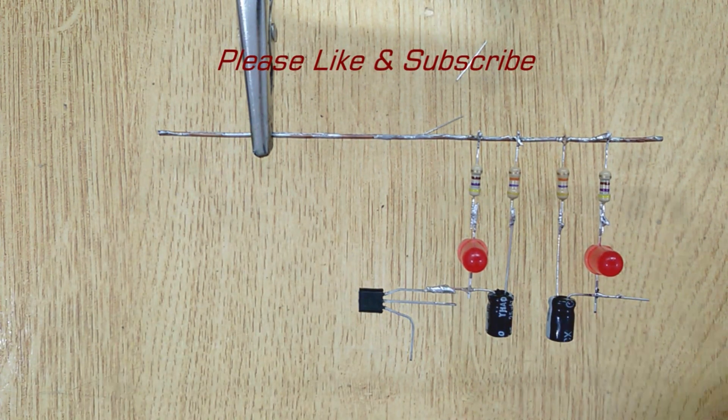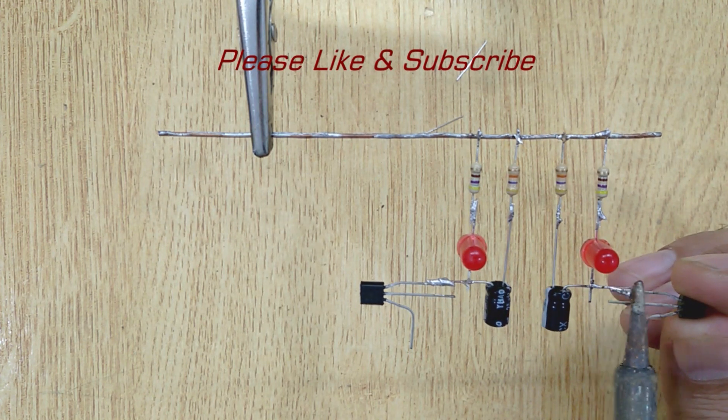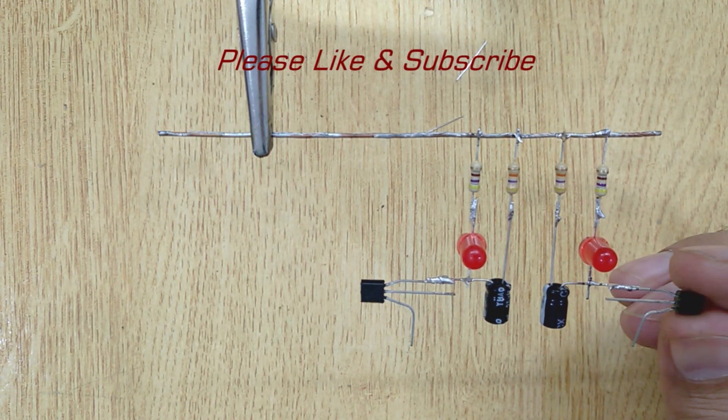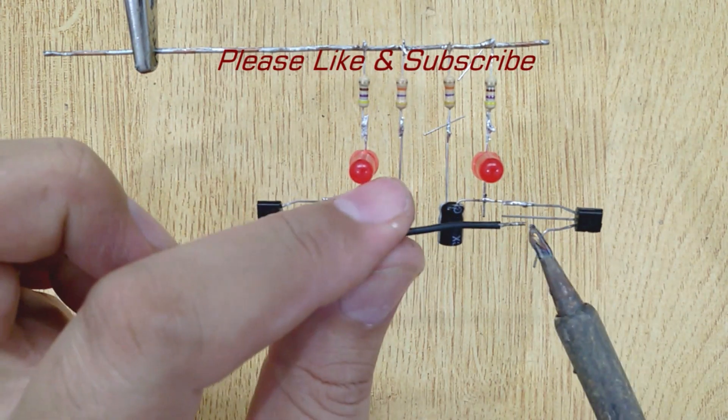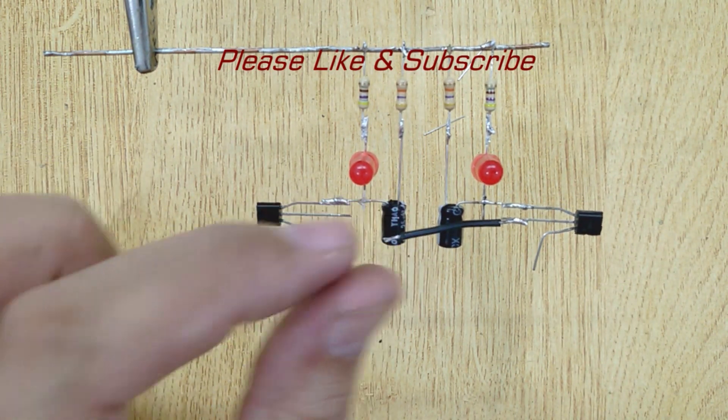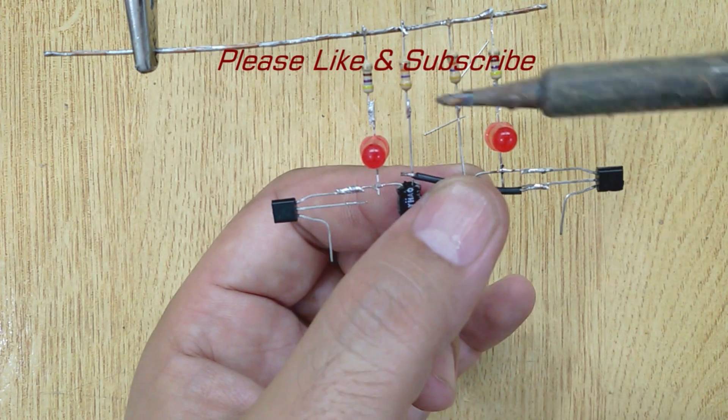Solder the emitter of the first transistor with the positive pin of the first capacitor, and the collector of the second transistor with the positive pin of the second capacitor.